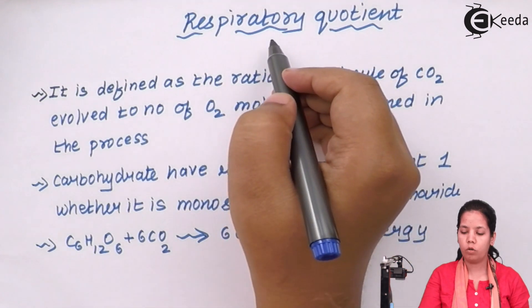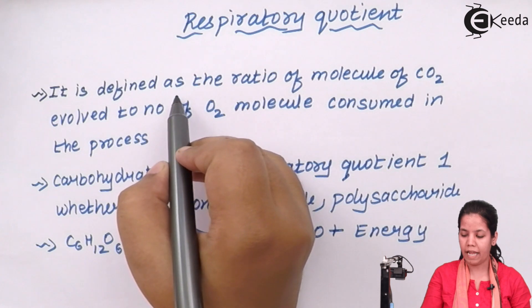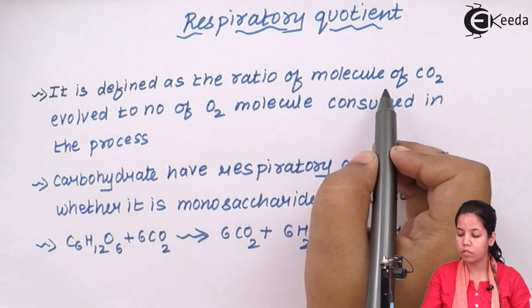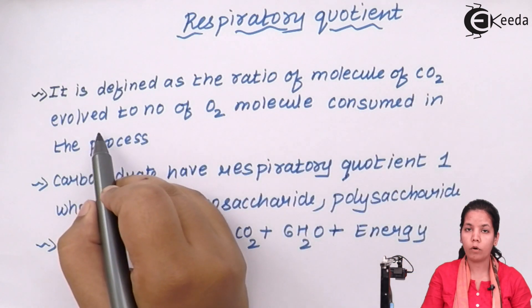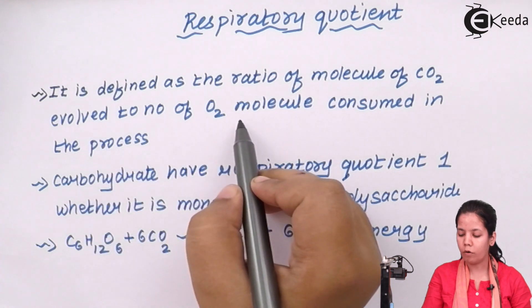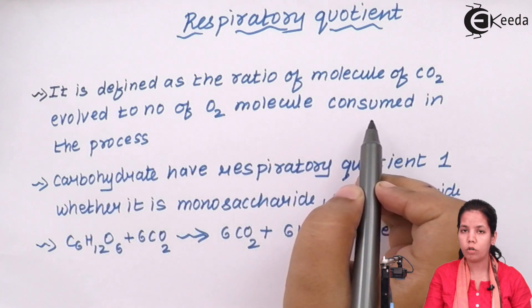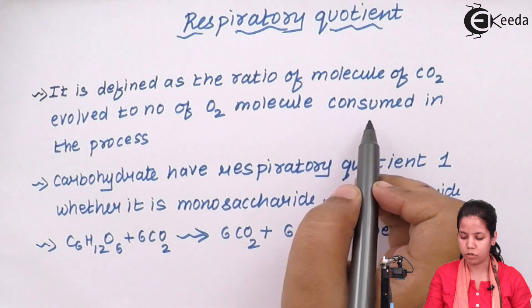Respiratory quotient can be defined as the ratio of molecules of CO2 that is evolved or removed out of the cell to the number of oxygen molecules consumed or used in the process of respiration.